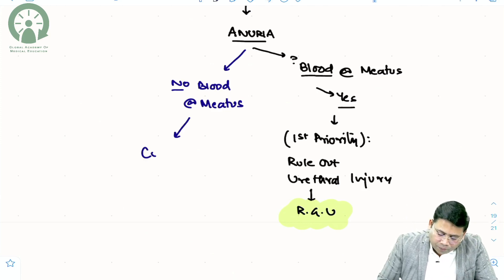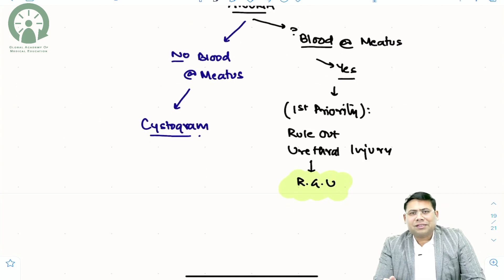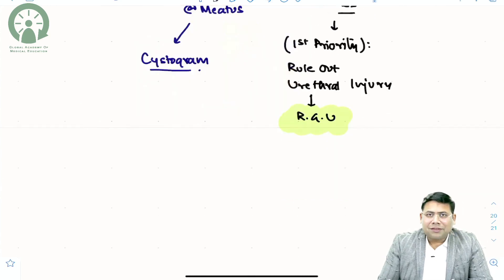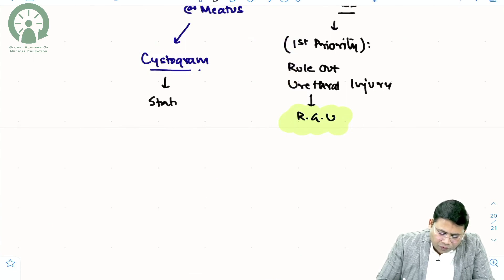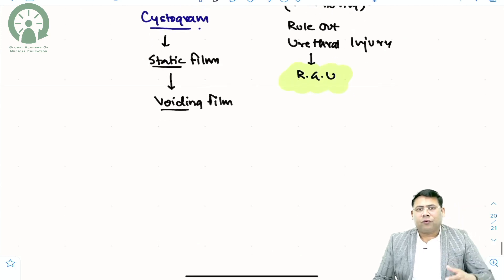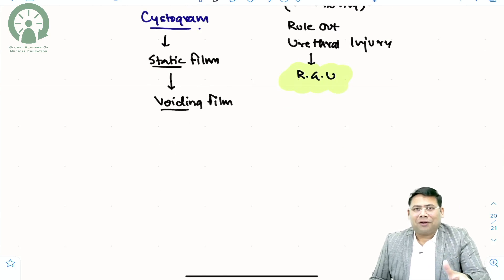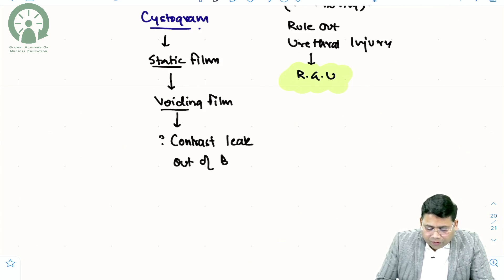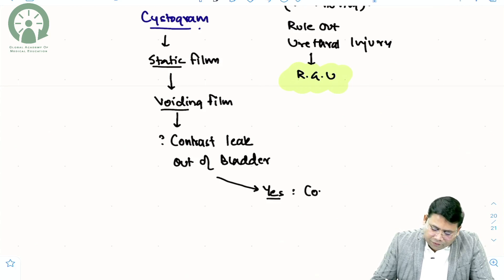If urethral injury is ruled out, you proceed to a cystogram. We push 250 cc of dye — we use urographin — retrograde into the bladder. First, a static film is taken. After the static film, a voiding film is taken. When you ask the patient to void, you check whether or not contrast is leaking out of the bladder.